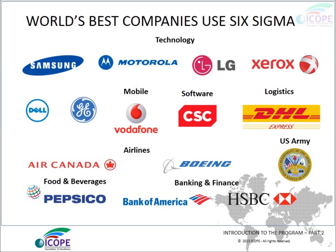World's best companies use Six Sigma. Technology-wise: Samsung, Motorola, LG, Xerox, Dell, GE, Vodafone, and CSE. In airlines: Air Canada and Boeing. In the military: the U.S. military uses Six Sigma. In food and beverages: PepsiCo. In banking: Bank of America and HSBC also use Six Sigma.